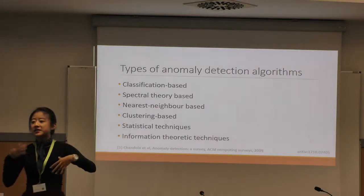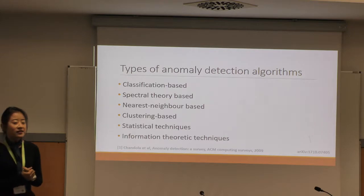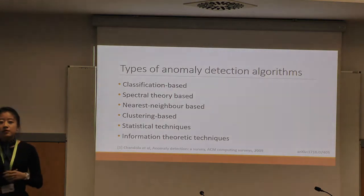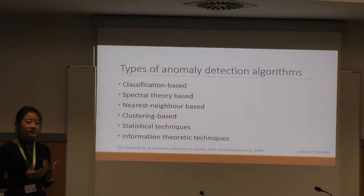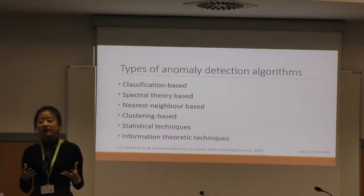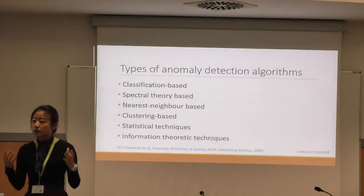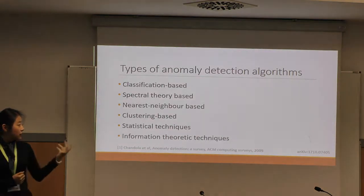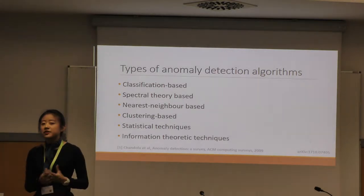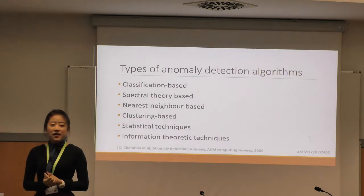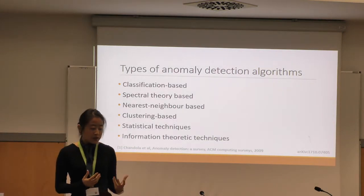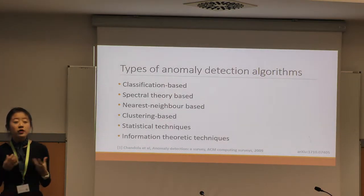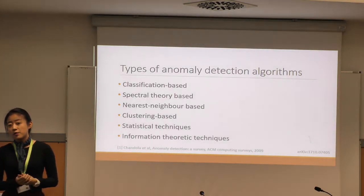We're only passing through the following types. You have classification-based algorithms, things like support vector machines; spectral theory-based methods, like principal component analysis; nearest neighbor or KNN-based algorithms; k-means clustering-based algorithms; statistical techniques, where if you have a good model of your underlying distribution that describes normal data; and also information theoretic techniques, using complexity measures to characterize your data and then flagging deviations as anomalies. What we'll be doing is choosing just two very simple algorithms from the classical toolkit and looking for a quantum analog to these.